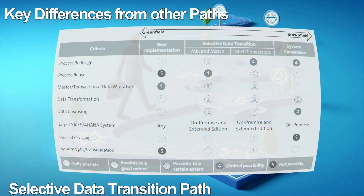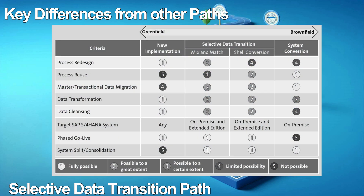Characteristic 1 is process redesign. In new implementations, you can redesign and re-engineer all processes, including changes to organizational structure. In system conversion, you can't redesign processes; however, if you consume further innovations, you can redesign those processes after the system conversion. Selective data transition sits between the two: you can redesign processes to a great extent, including organizational structural changes in the mix and match approach, while shell conversion presents a more limited possibility of process redesign.